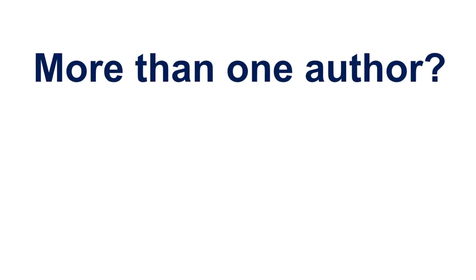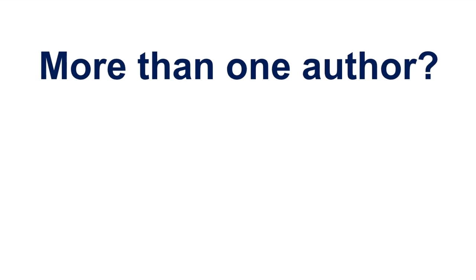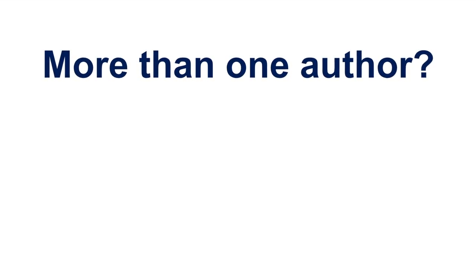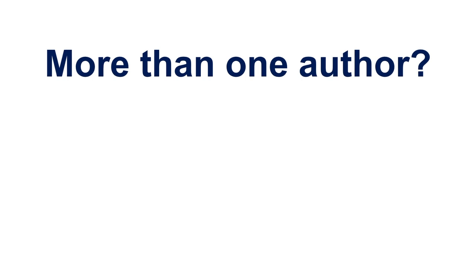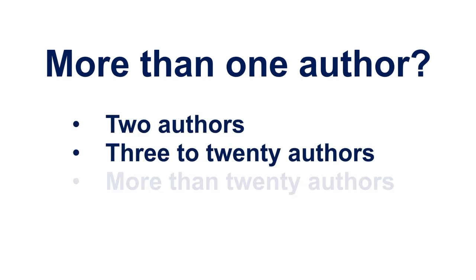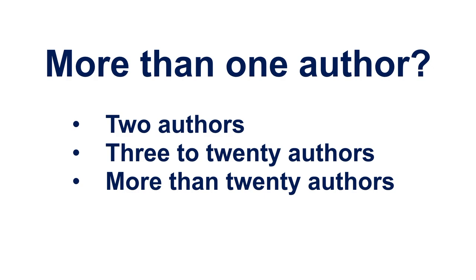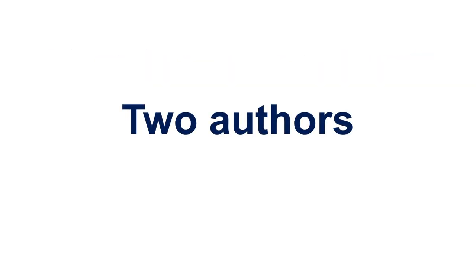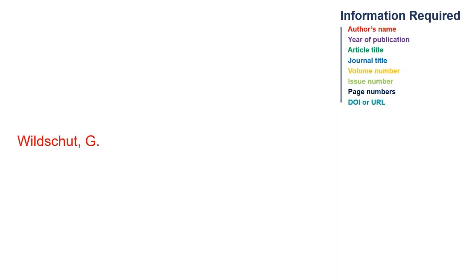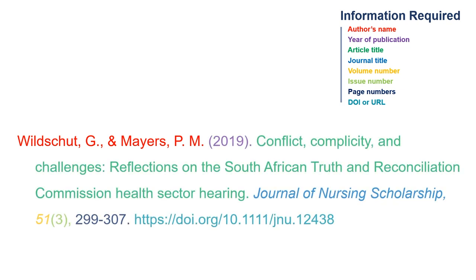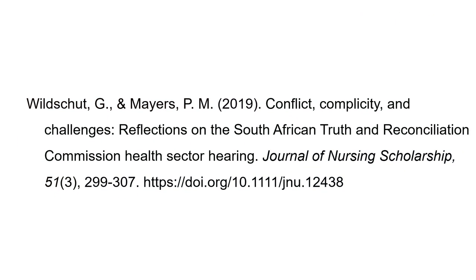Scholarly journal articles are often written by more than one author. The 7th edition of the APA manual provides specific details on how to cite journal articles written by two authors, three to twenty authors, and more than twenty authors. To cite a journal with two authors, include the first author's last name and initials, followed by a comma, space, and ampersand, and list the second author's last name and initials as you did with the first. The rest of your citation will be completed the same way as before.